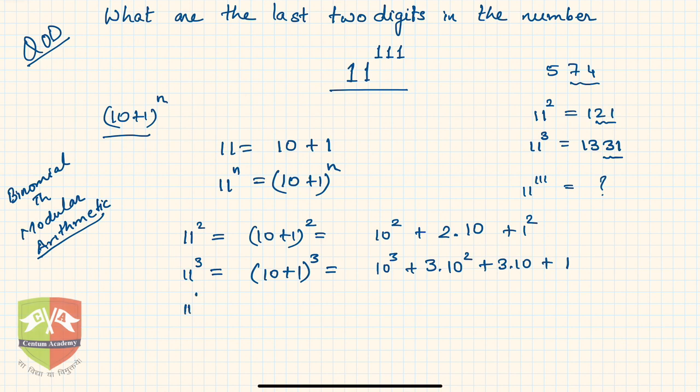Now 11 to the power 4, whether you know the identity or not I'll tell you. By just multiplying these two twice you'll get this: 10 to the power 4 plus 4 times 10 cube plus 6 times 10 squared plus 4 times 10 plus 1.